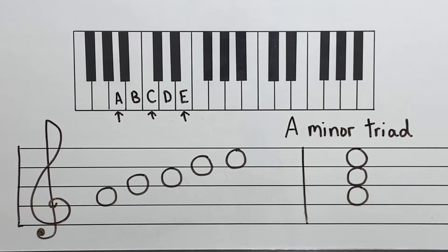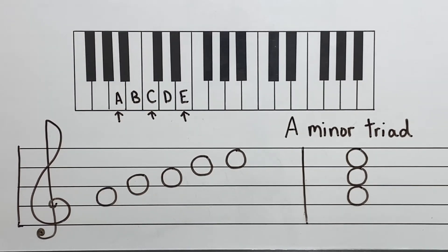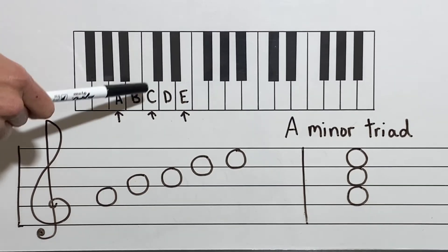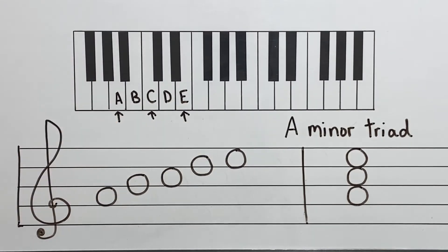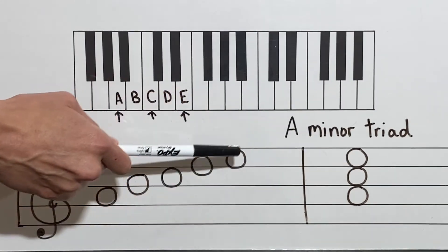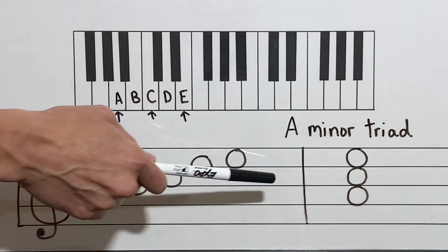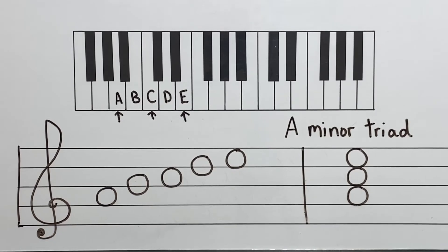Next we're going to move on to our A minor triad. On our keyboard, I have our A minor five finger pattern: A, B, C, D, and E, with arrows on A, C, and E — our root, our third, and our fifth. When I play A minor on the piano, I'm going to be playing A, C, and E all at the same time. Back to our treble clef, I have the pattern written out, then I take my root, my third, and my fifth over to form my stack — space, space, space. On the piano, I will be playing the A, the C, and the E at the exact same time.